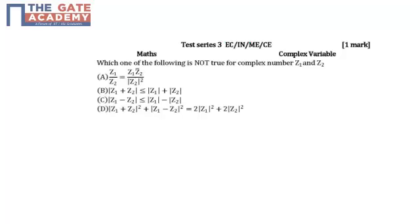Hello students, the following question is from test series 3, subject mathematics, chapter complex variable, and the question is asked for one mark. The question is: which one of the following is not true for complex numbers Z1 and Z2?